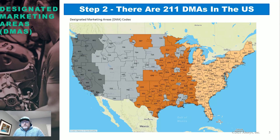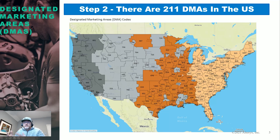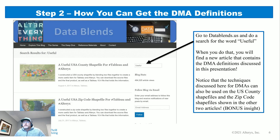So what are the 211 DMAs? Here's a map showing them — DMAs come with a three-digit code in the 500, 600, 700, and 800 series, going from east to west. The 500 series are on the east coast, 600s in the central region, 770s in the mountain region, and 800s on the west coast. There are some 700s in the Midwest as well. What I want to do is compute leases at the DMA level and display them on a map like this.